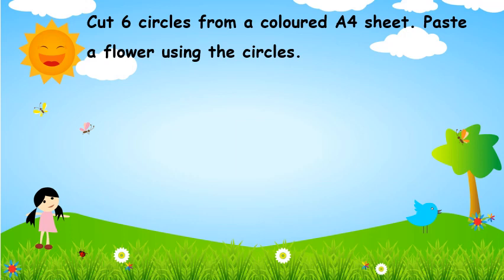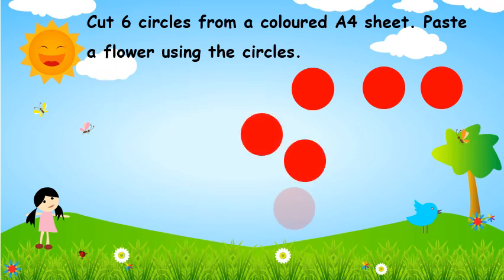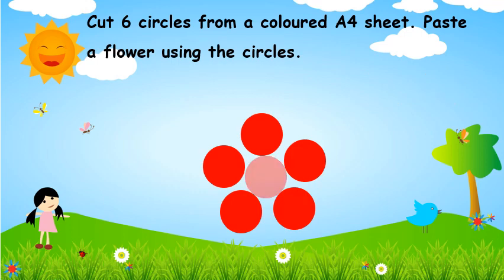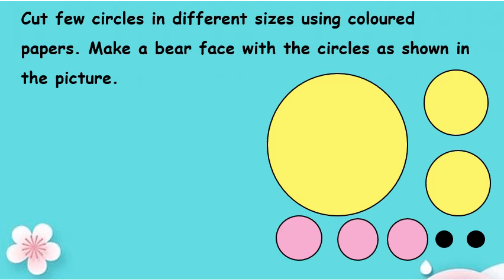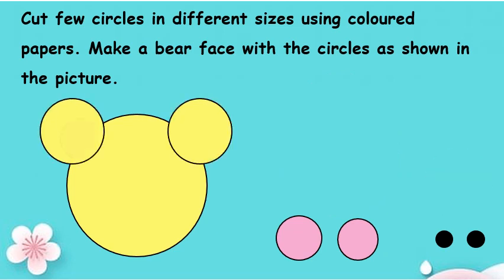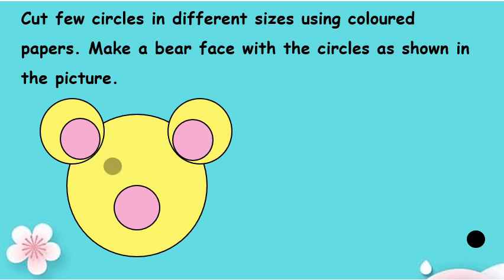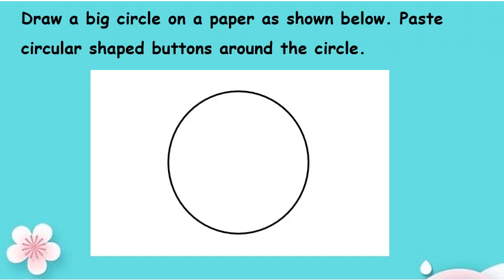Dear parents, cut six circles from a coloured A4 sheet and help the child to paste a flower using the circles. Dear parents, cut a few circles in different sizes using coloured papers and help your child to make a face with the circles as shown in the picture. Take a blank paper and draw a big circle on the paper as shown, and help your child to paste circular shaped buttons around the circle like this.